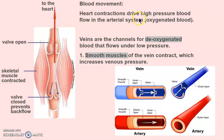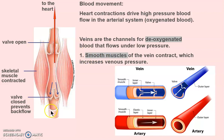Heart contractions drive the arterial system, but how does deoxygenated blood return from the tips of your toes back to the lungs? We don't have little pumps in our toes or fingers. The smooth muscles lining the venous channels can contract and move blood toward the heart. Veins also have valves — arteries don't need them because we're pumping huge volumes. Veins have thin walls; arteries are thick because they're under enormous pressure.